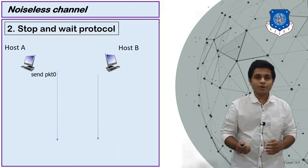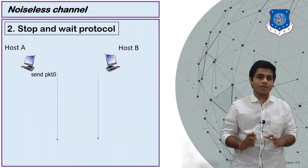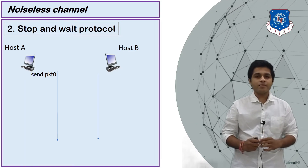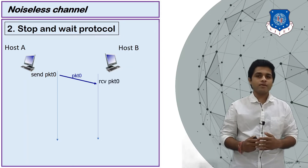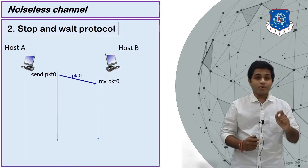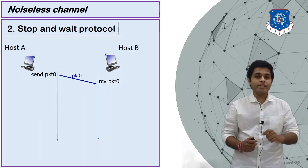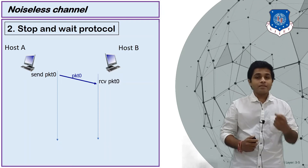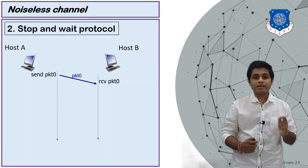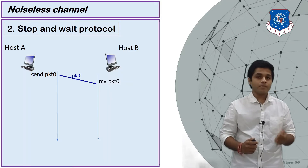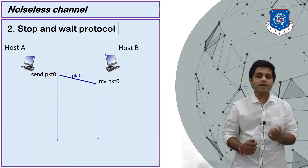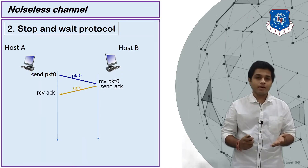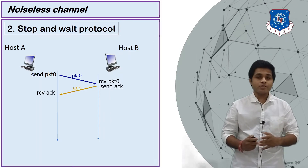That drawback is overcome in the next protocol, which is stop-and-wait. Again two devices A and B — A sends packet 0 and B receives packet 0. Stop-and-wait is a bidirectional protocol, meaning after receiving a packet the receiver will inform the sender that it has received the packet, using an acknowledgement. So B receives packet 0 and sends an acknowledgement back to A.